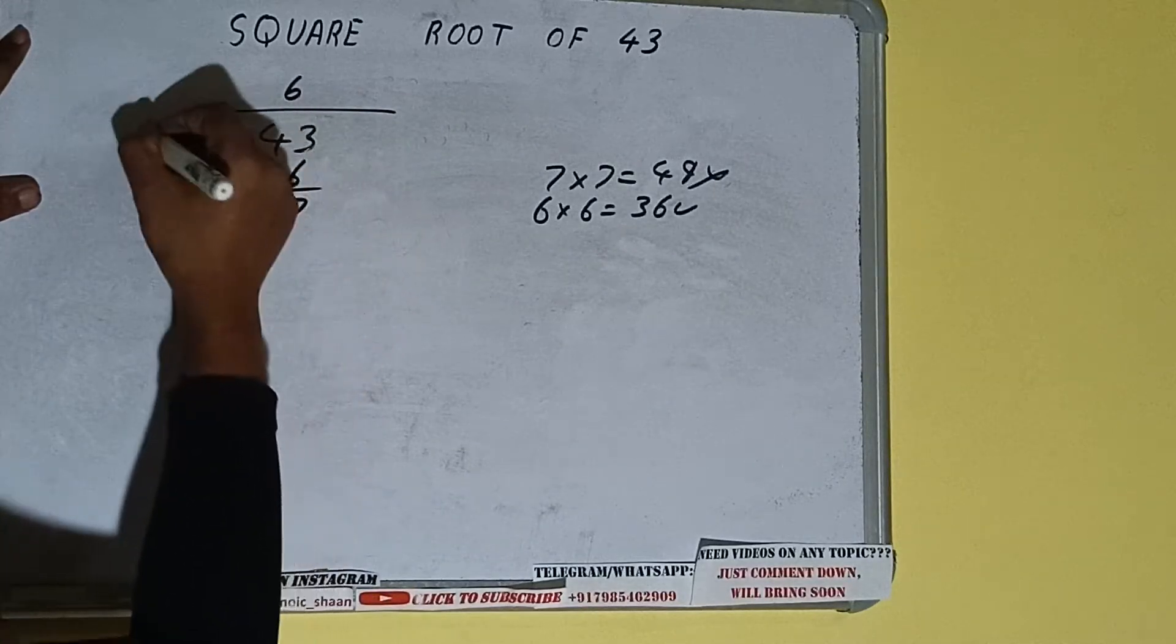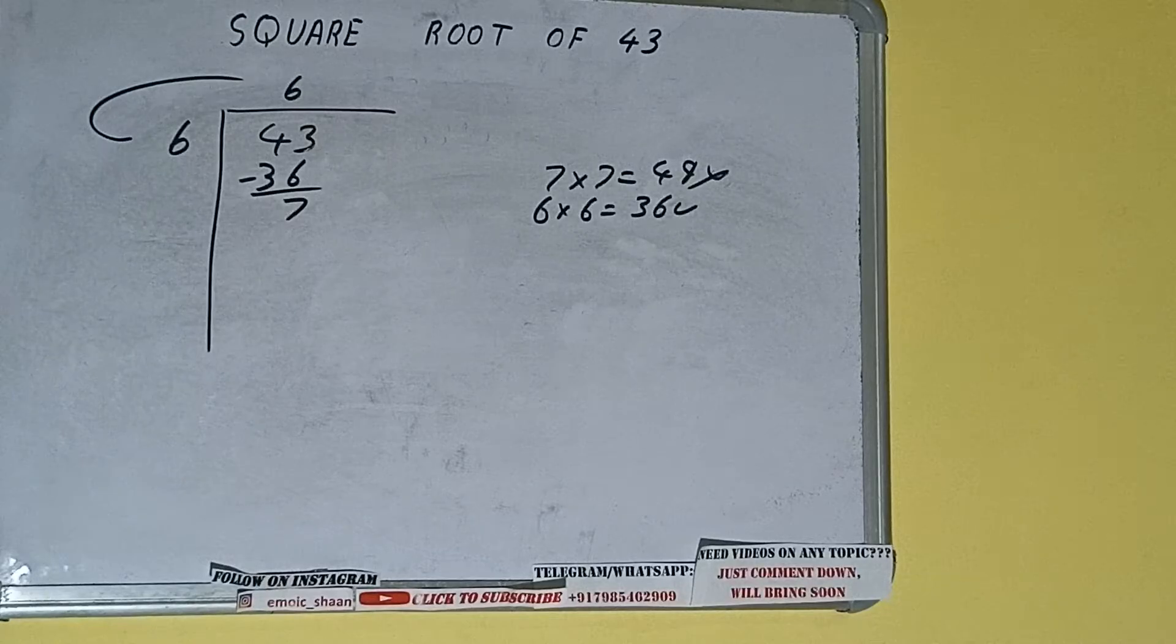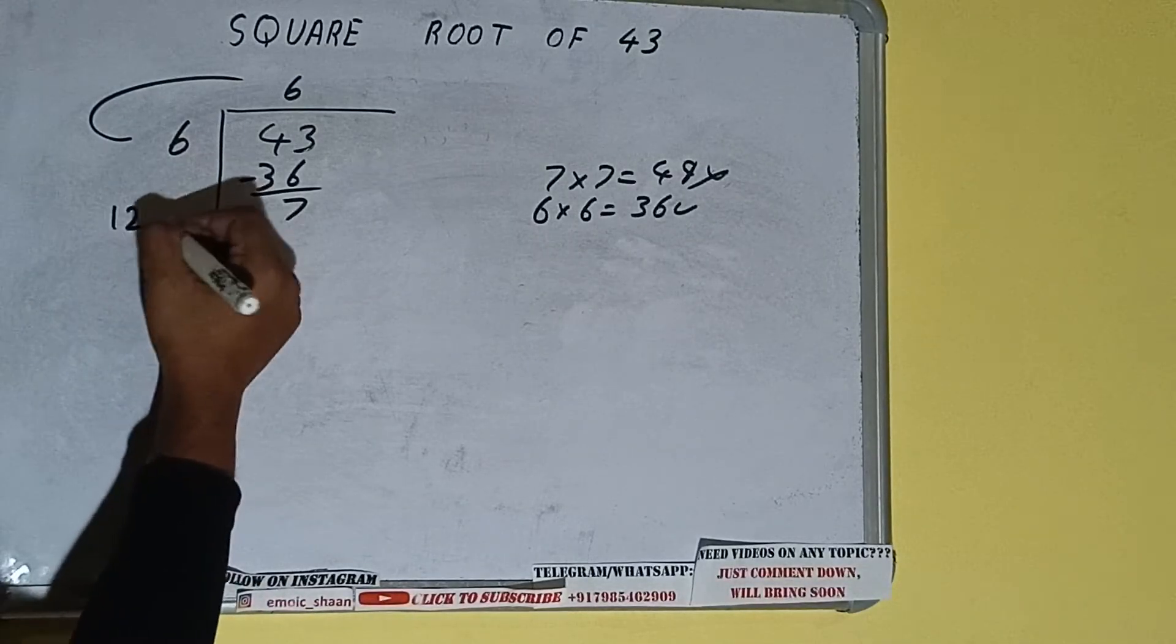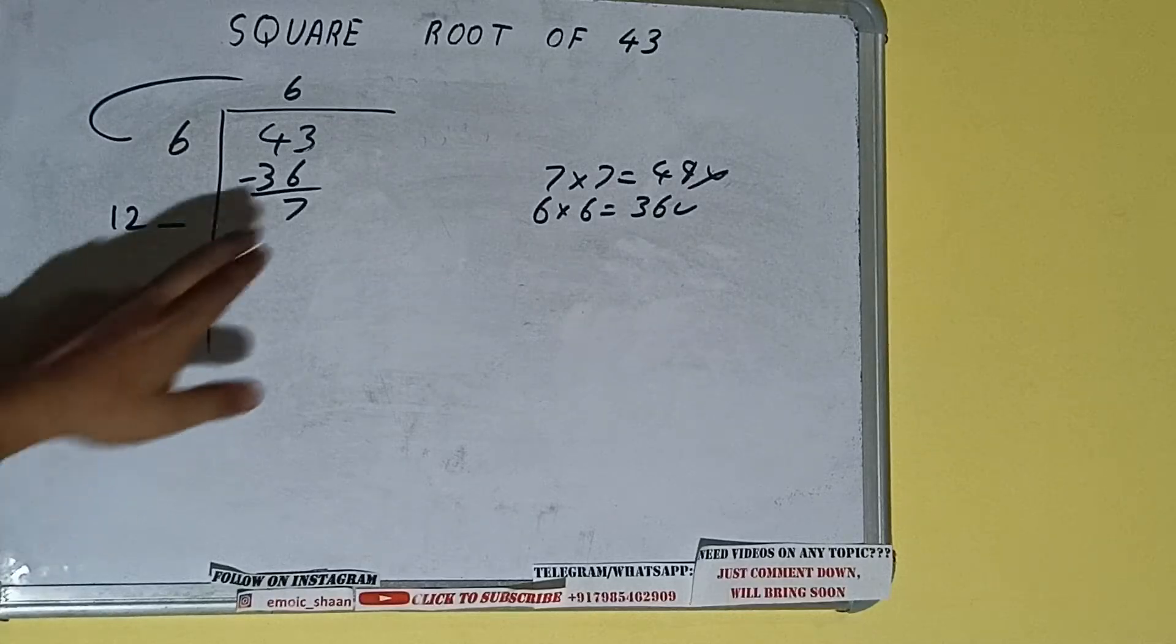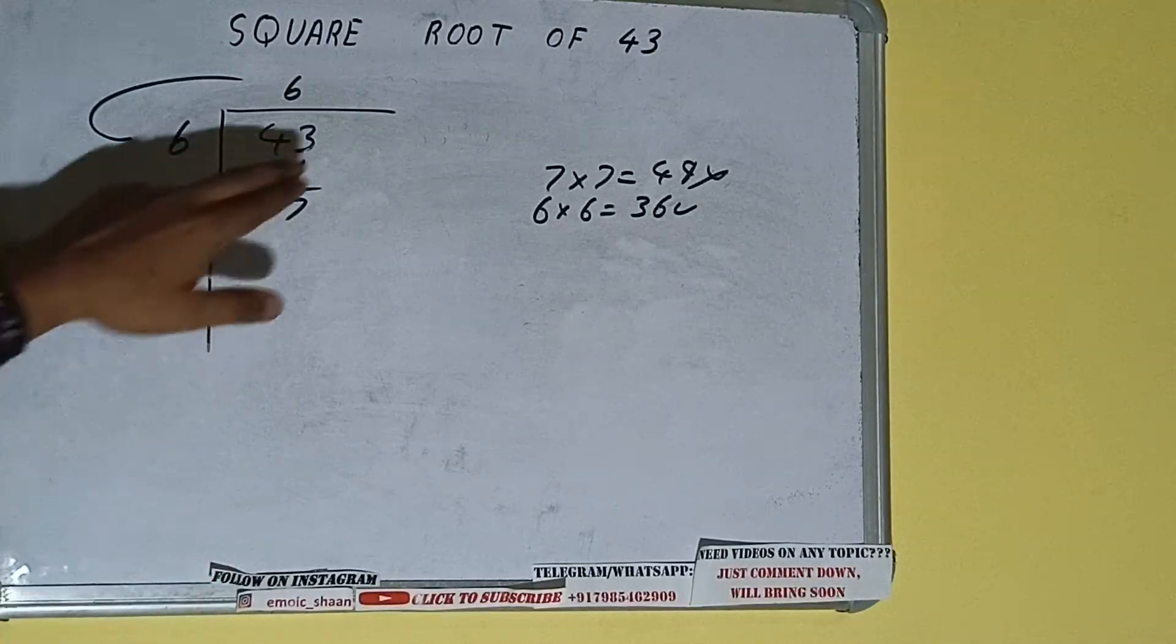Subtract, 7 will be left. We did 6 into 6, so add both. 6 plus 6 will be 12. Write it here and keep adding it extra. This number we need to make big, but we don't have more pairs.